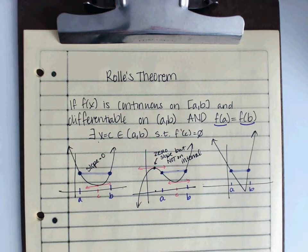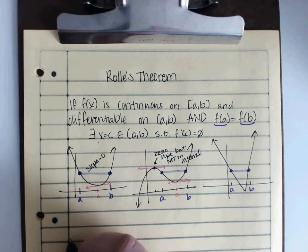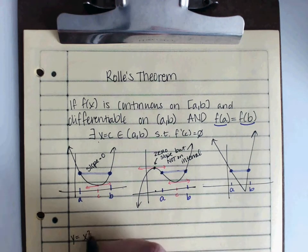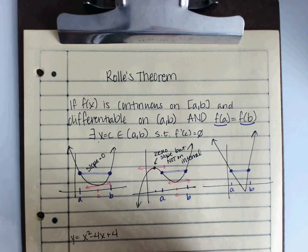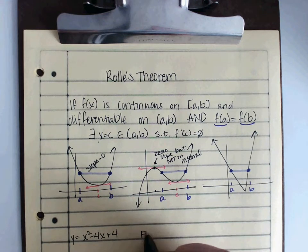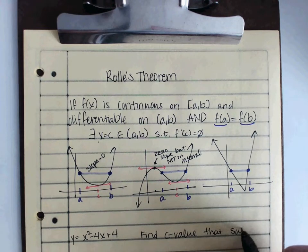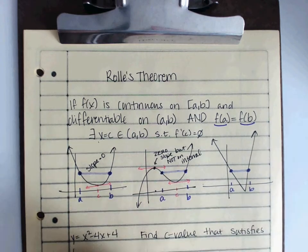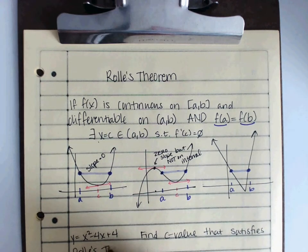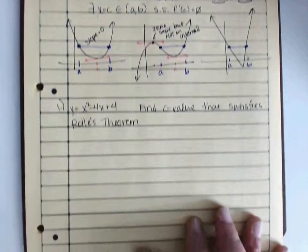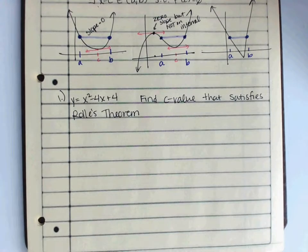So, we're going to just do two examples. We'll do one in your notes, we'll do one off of the homework, just to make sure that you got it. So, the example that we're going to look at for Rolle's Theorem is y equals x squared minus 4x plus 4.